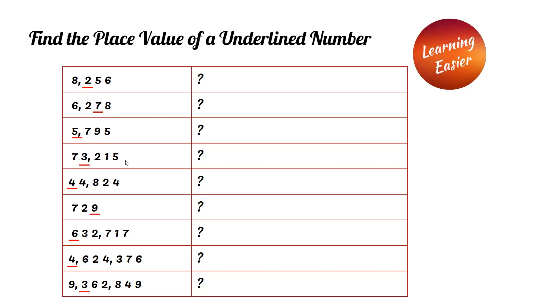73,215. Here we underlined three, so the answer is 3,000. 44,824. The four in the ten thousands place is the correct answer, so the answer is 40,000.